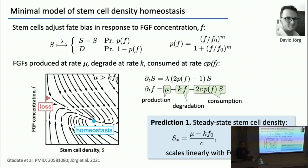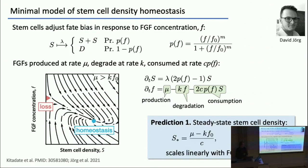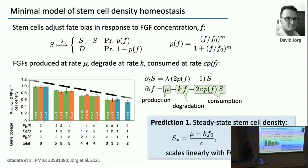We can change the allele fraction of FGFs. Shose's lab looked at huge numbers of permutations of different mice with different allele fractions of FGF5, FGF8, and FGF4. And actually, the steady-state density pretty much linearly tracks with the allele fraction. Tick.